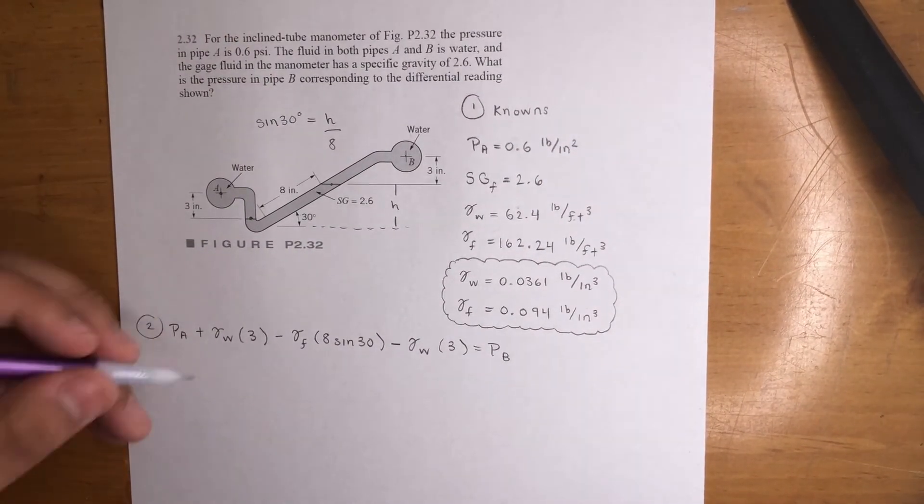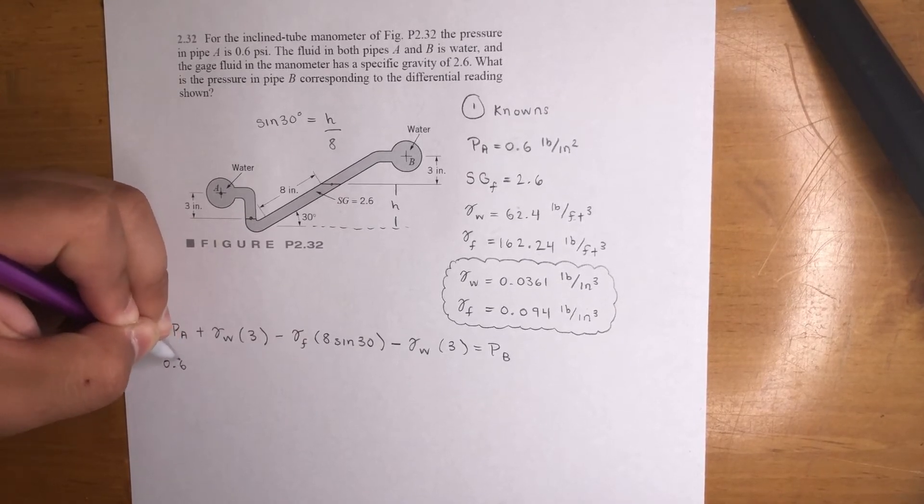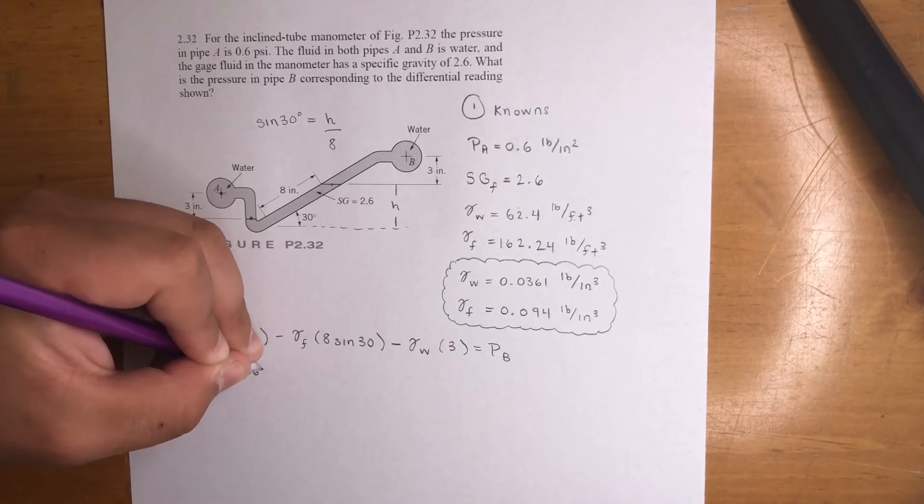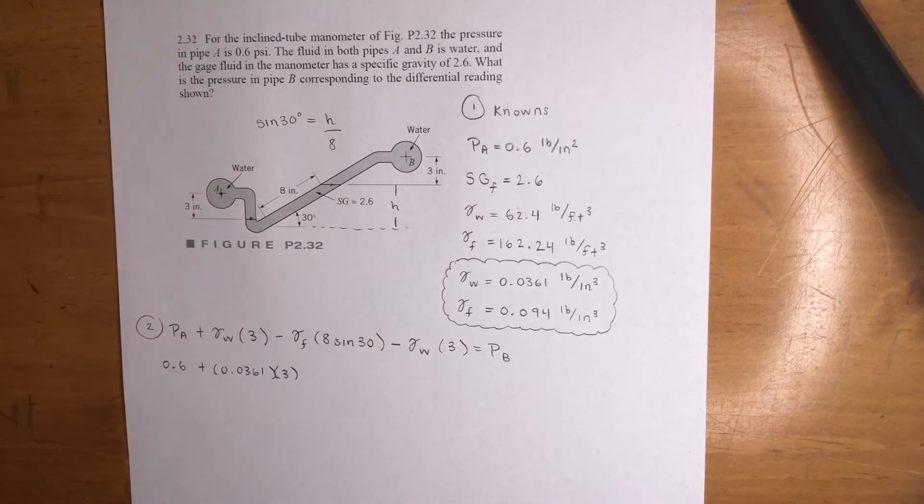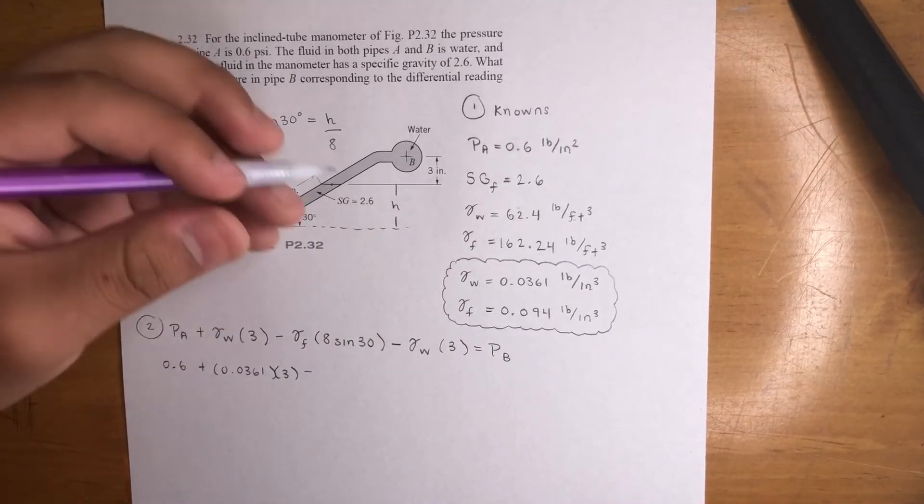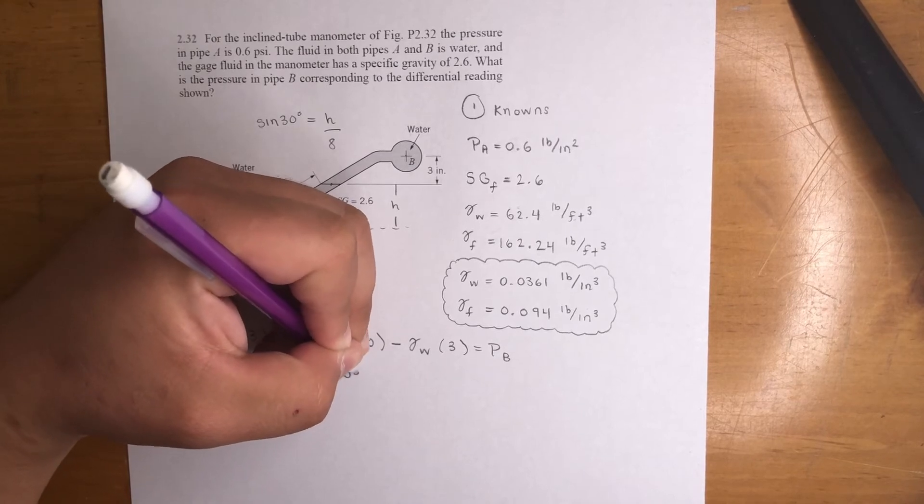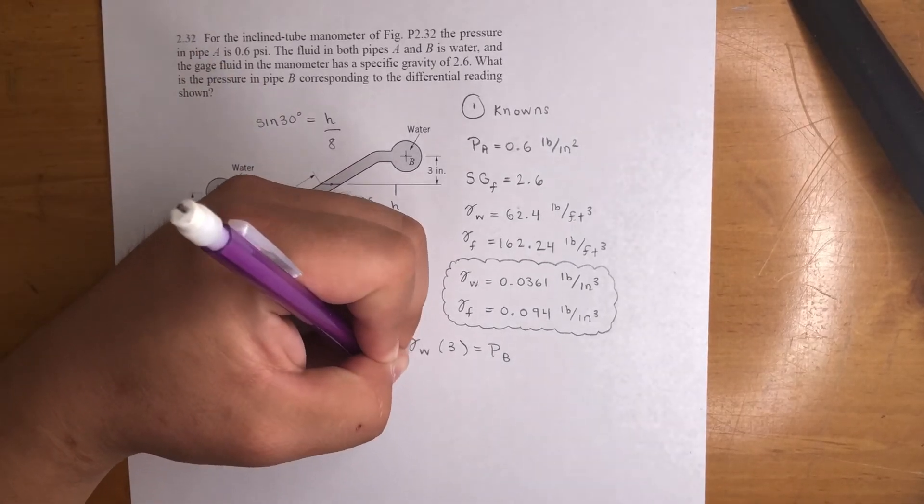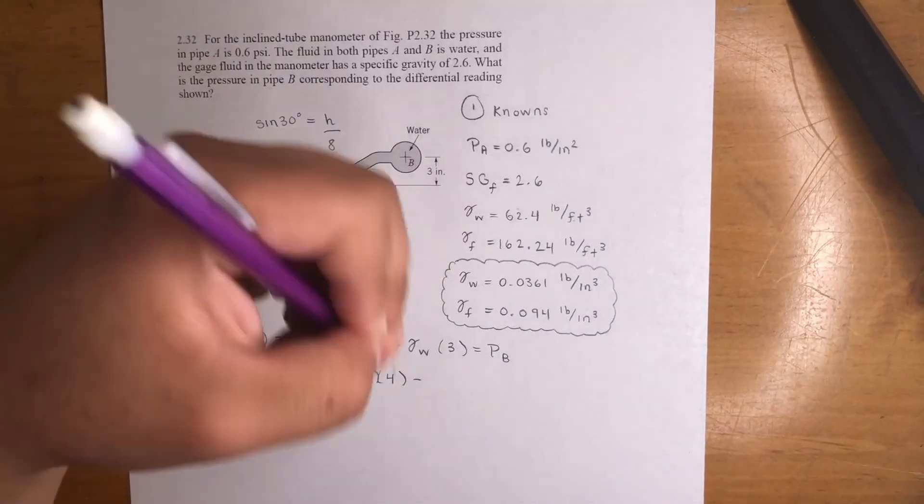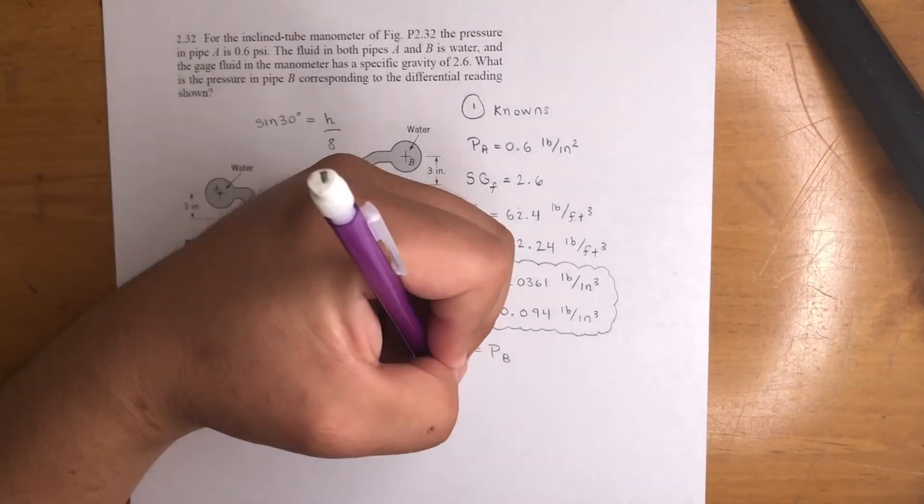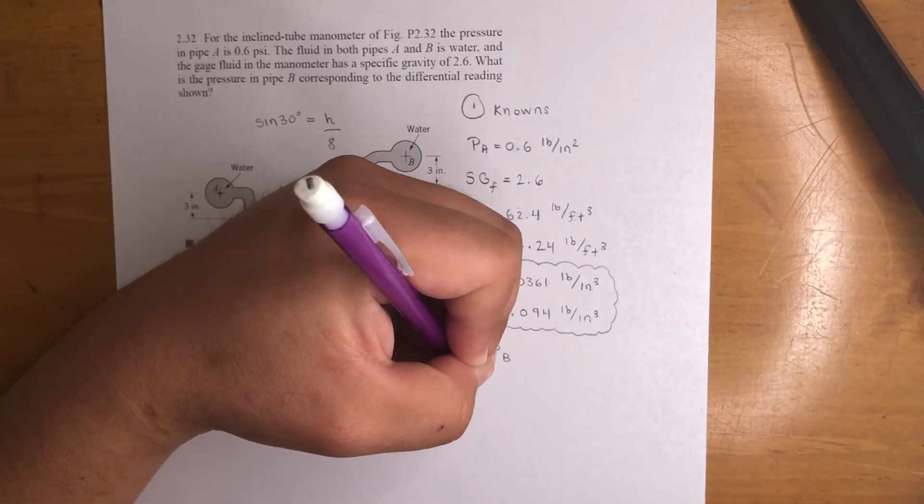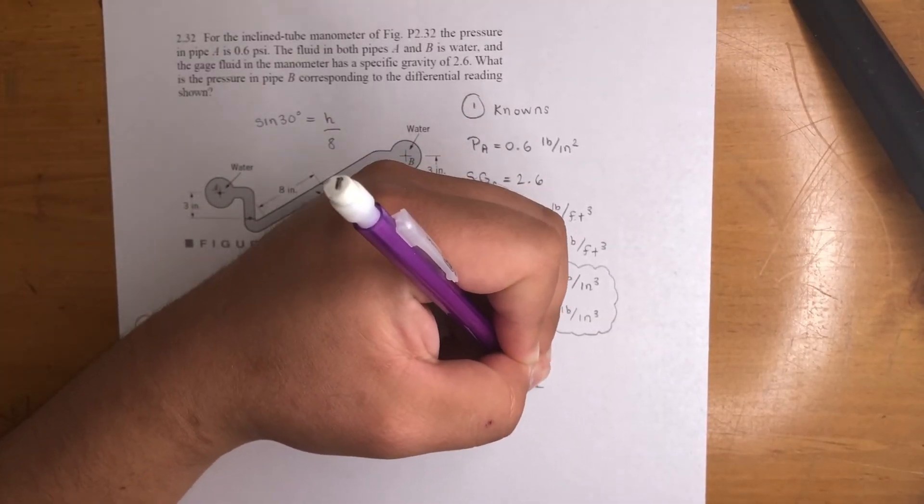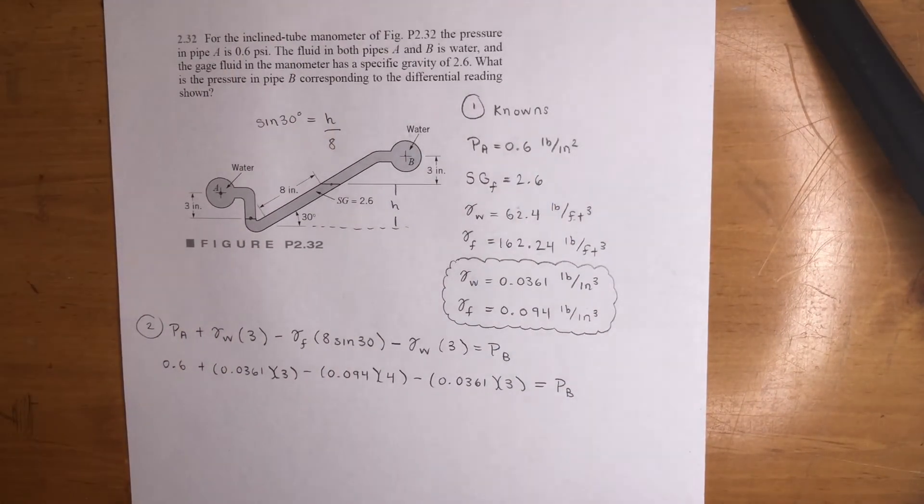So let's go ahead and plug in. This is 0.6 right here plus 0.0361 times 3 minus gamma fluid, that is 0.094. Sine 30 is just 0.5 times 8, that is 4. Minus, now water again, right? 0.0361 times your height 3 is equal to PB. So cool, we know everything. Let's do a little bit of algebra.